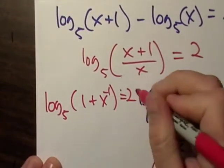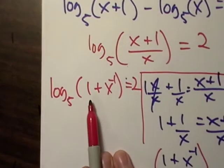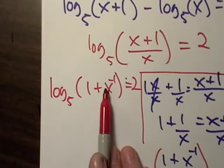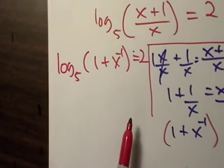It's still equal to 2. I got a little sloppy there, I apologize. Log₅ of 1 plus x to the negative 1 equals 2. It looks a little weird because we haven't really done a whole lot with it.